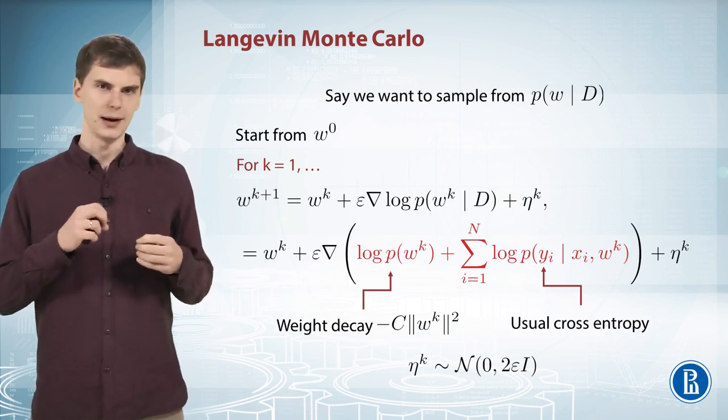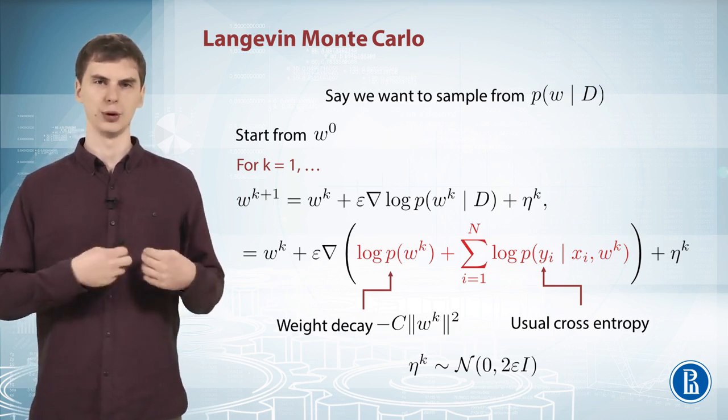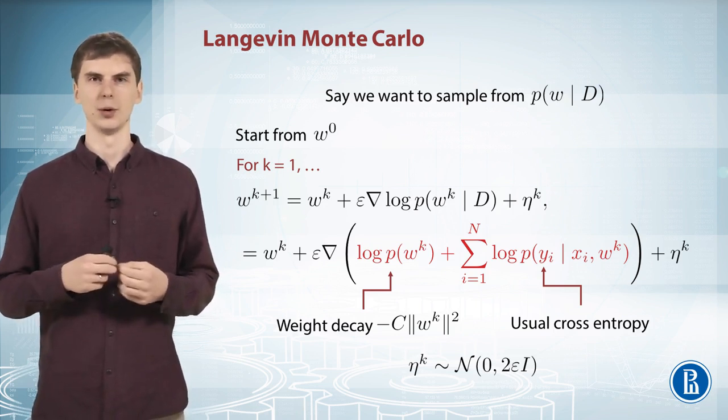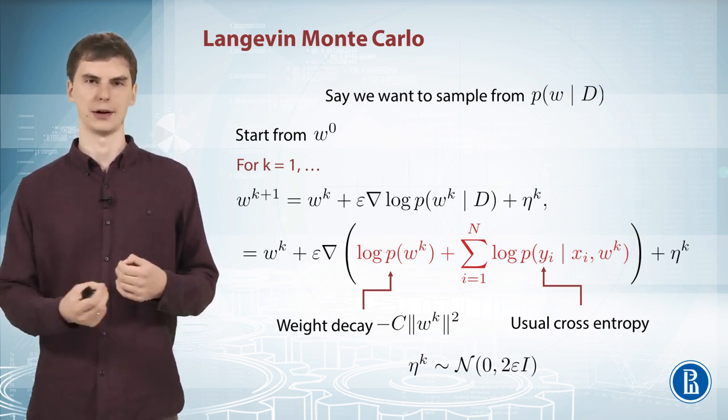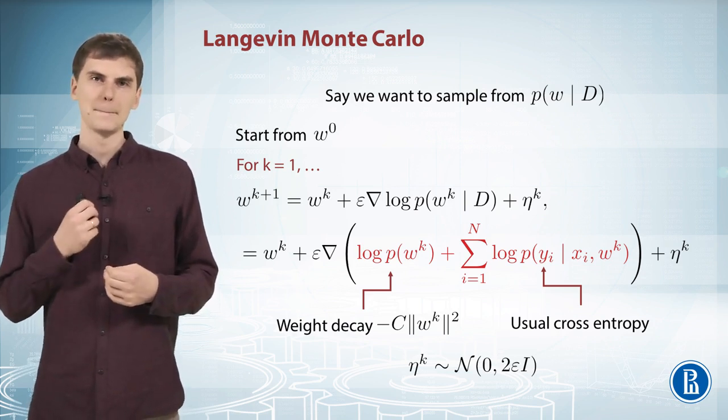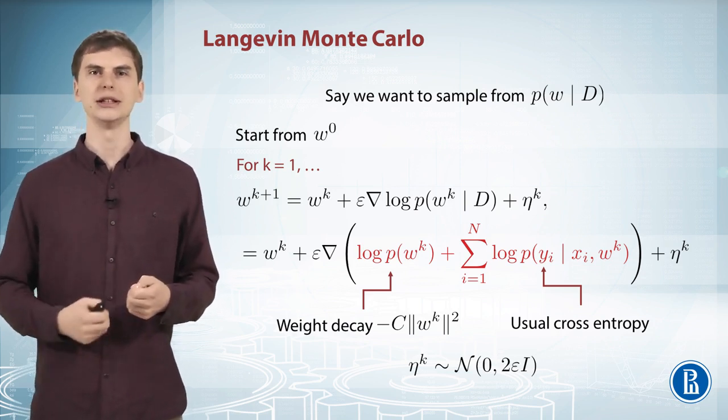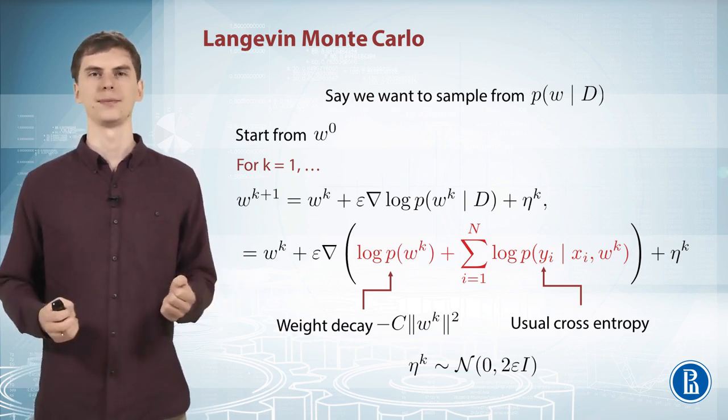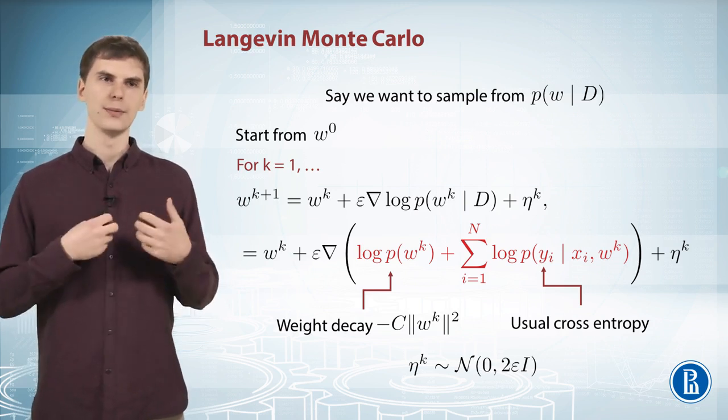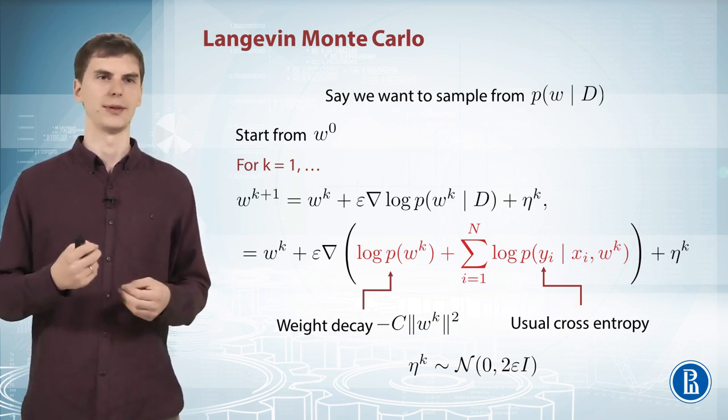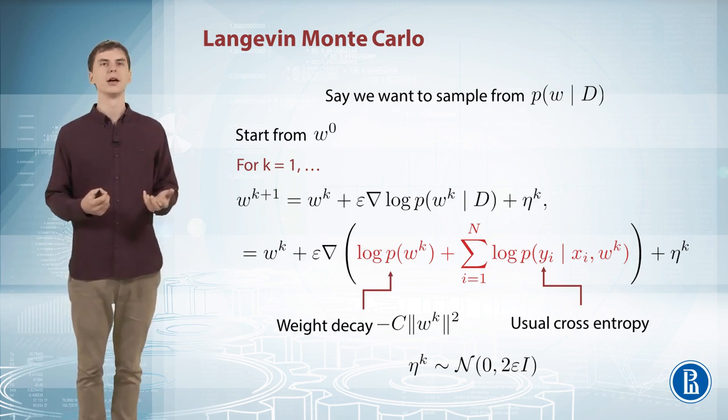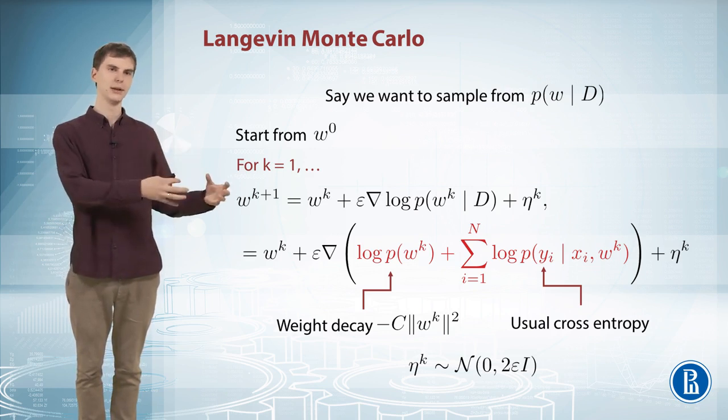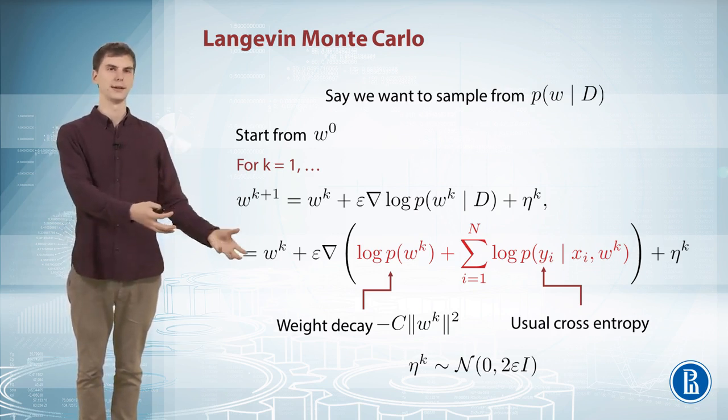So basically if you omit the noise you will just have a usual gradient ascent. And if you use infinitely small learning rate then you will definitely go to just the local maximum around the current point. But if you add the noise on each iteration, theoretically you can end up in any point in the parameter space. But of course with more probability you will end up somewhere around the local maximum. If you are doing that you will actually sample from the posterior distribution, so you will end up in points with high probability more often than in points with low probability.